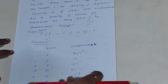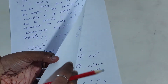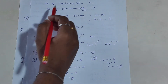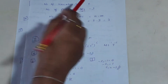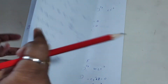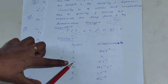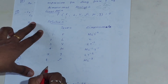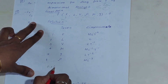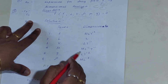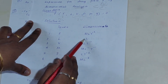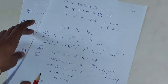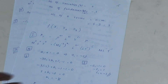Next, find how many Pi terms are needed. The number of variables n = 6, that is F, L, V, μ, ρ, and g. The number of fundamental units m = 3 (M, L, T). So the number of Pi terms = n − m = 6 − 3 = 3.